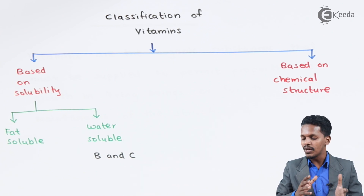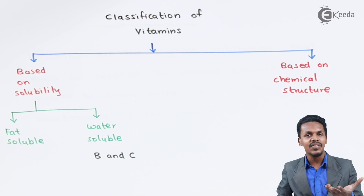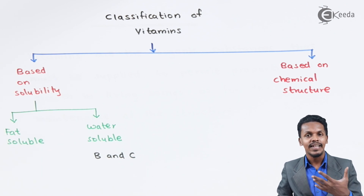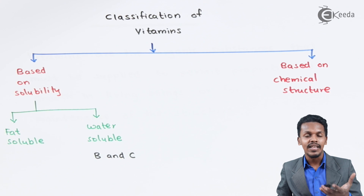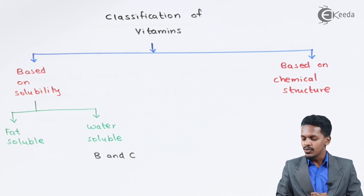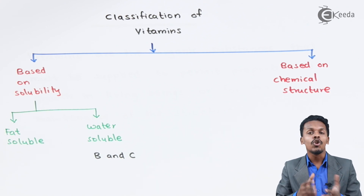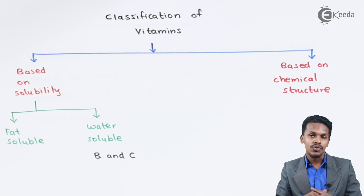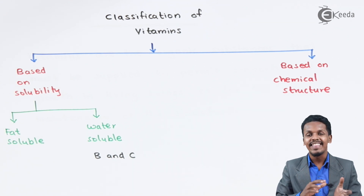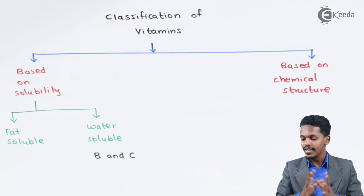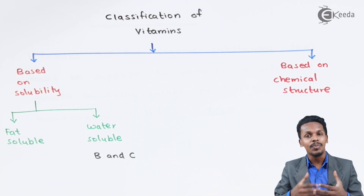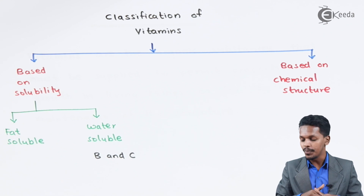Vitamin C is present in lemon in the form of citric acid, also called ascorbic acid. They are soluble in water but are not stored in our body, which is a disadvantage, and that is why they should be regularly consumed.